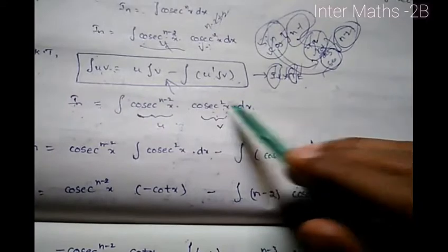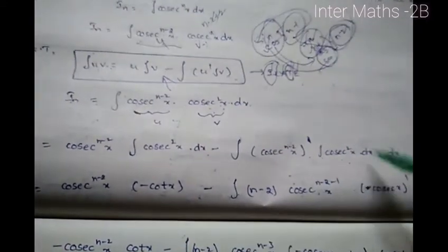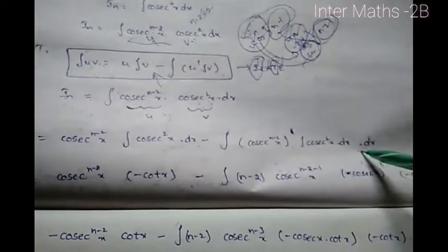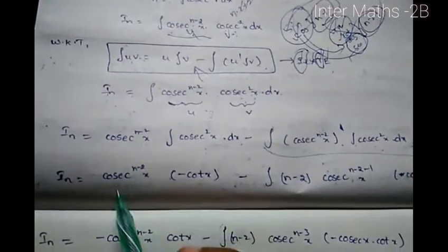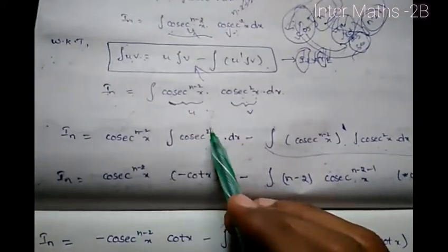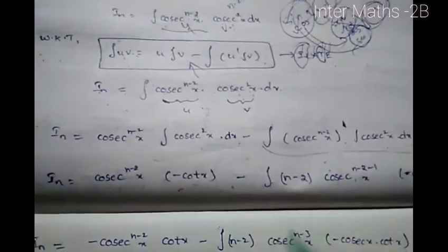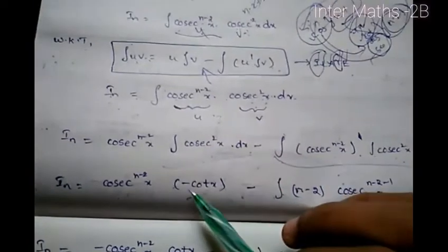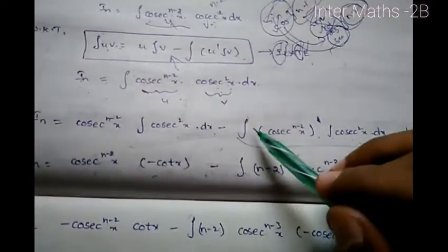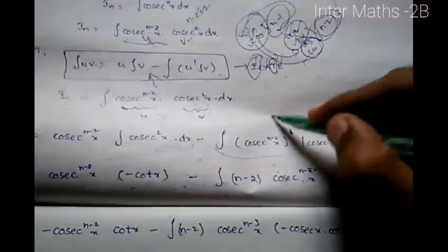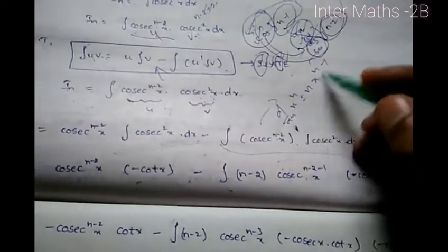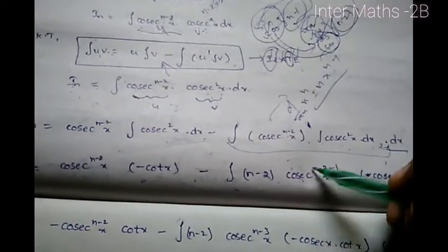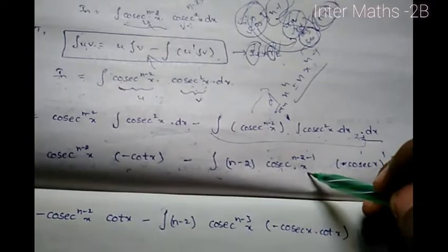So v equals cosine squared x into dx. We have the formula for dx — it's just integral. I suffix n equals cos^(n-2) x, and we apply integration of cosine squared x into dx. We have the formula: d by dx of x^n equals n times x^(n-1), so applying d by dx of cos^(n-2) into x^(n-2) gives minus 1 into the formula applied.